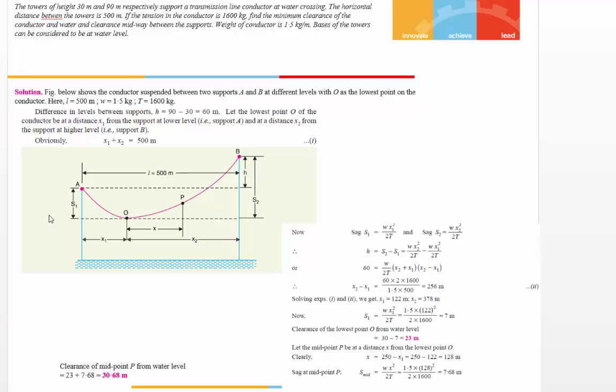So 60 equals w/2T as a common factor, times (x2² - x1²), which is (a+b)(a-b). Substitute these values. The total distance x1 + x2, we know, is 500.